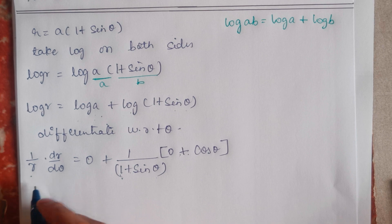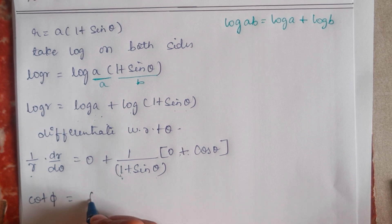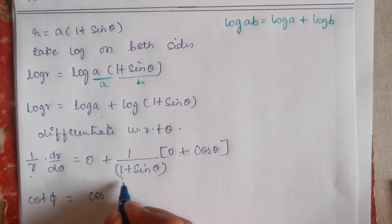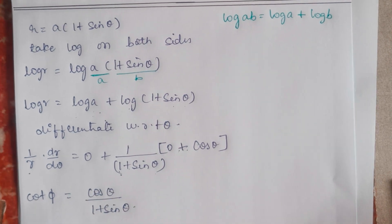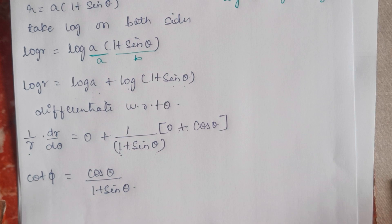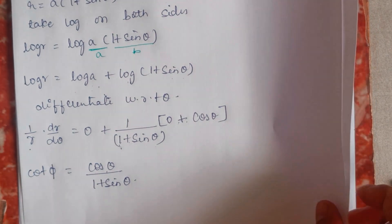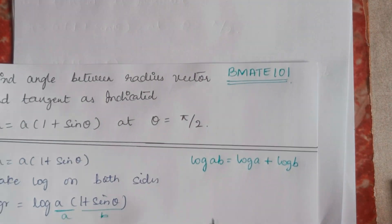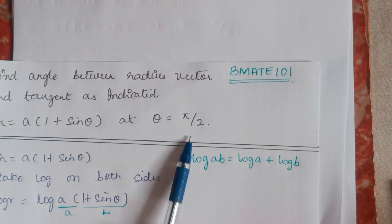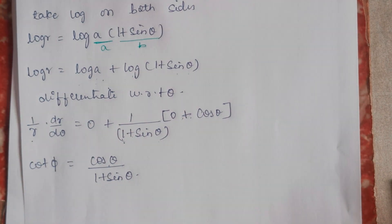We know that (1/r)(dr/dθ) is nothing but cot φ. So cot φ = cos θ / (1 + sin θ). Now the value of θ is given in the question as θ = π/2.